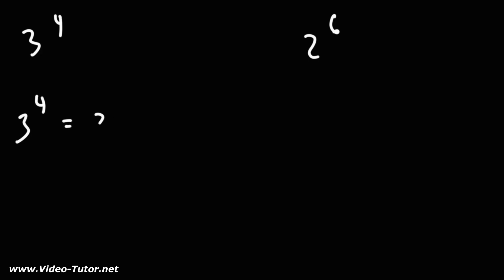3 to the 4th power means that we're multiplying four 3's together. 3 times 3 is 9, and the last two 3's also makes 9. 9 times 9 is 81. So 3 to the 4th power is 81.